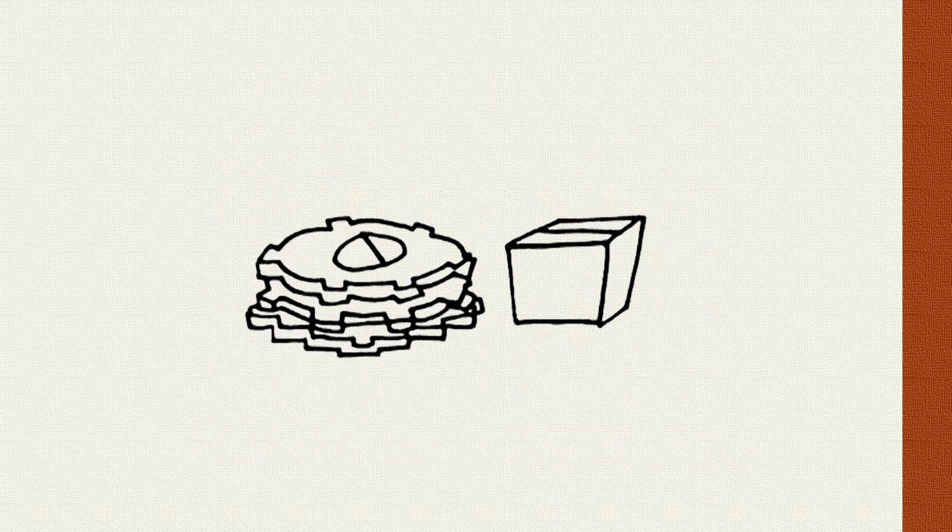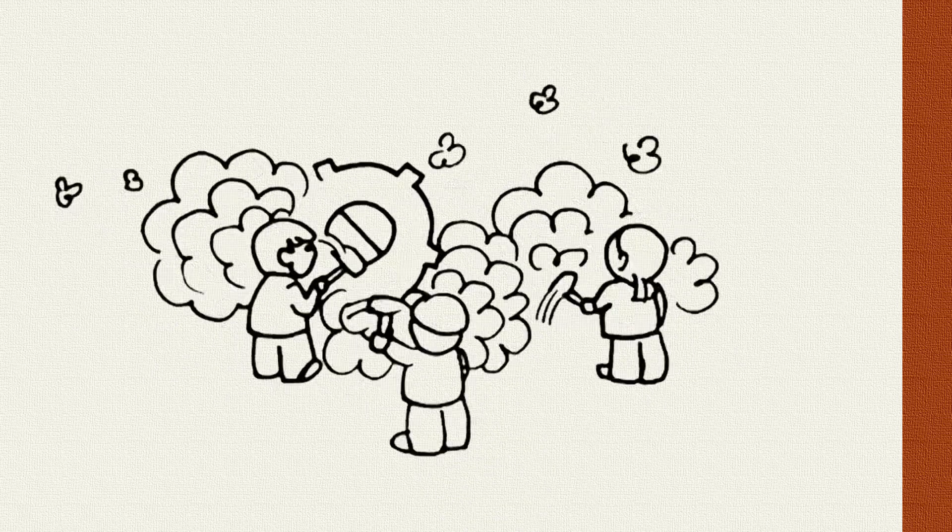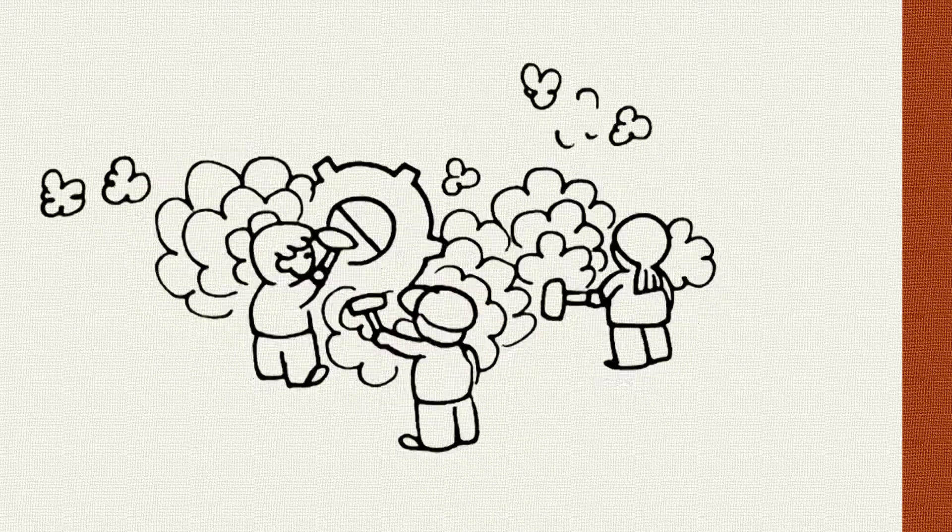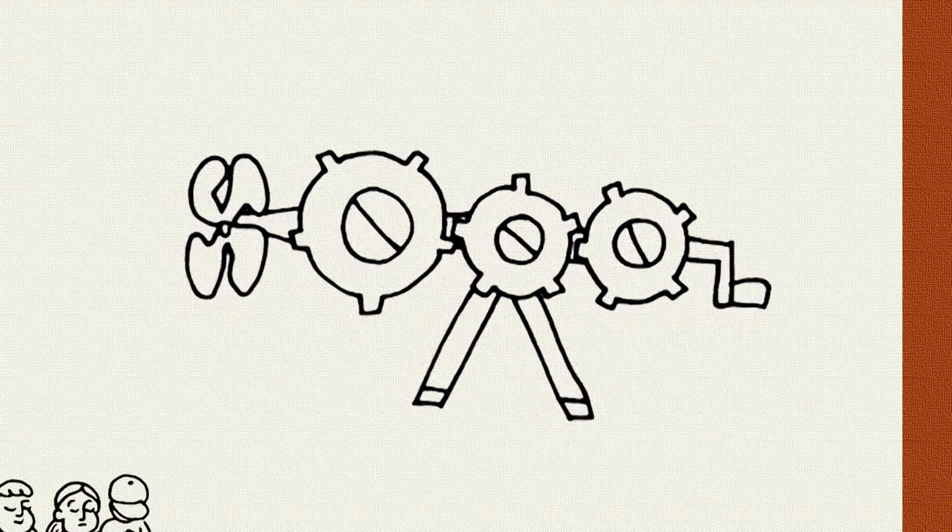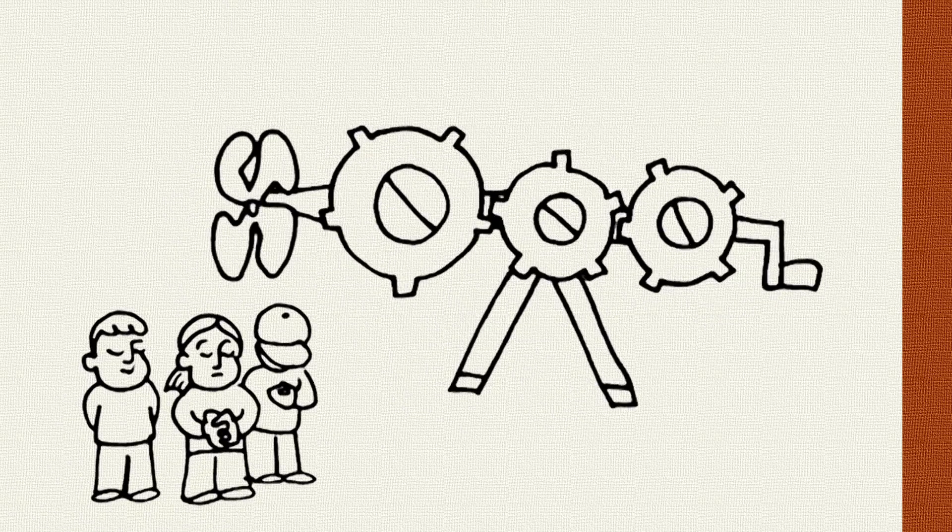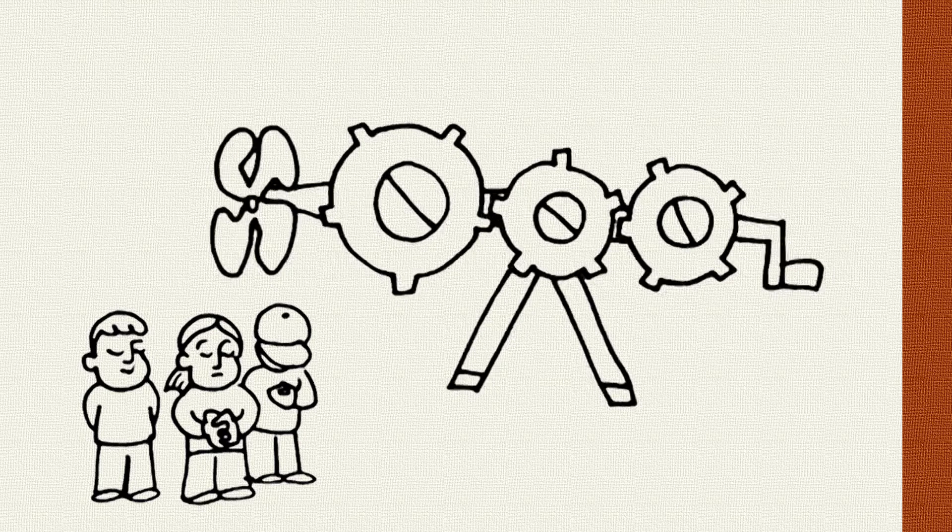So in one of our follow-up tasks, we actually give children similar materials and have them build their own machine. Children that have generated an explanation for how this machine works are better at building their own machines based on new materials than children who just described or observed.